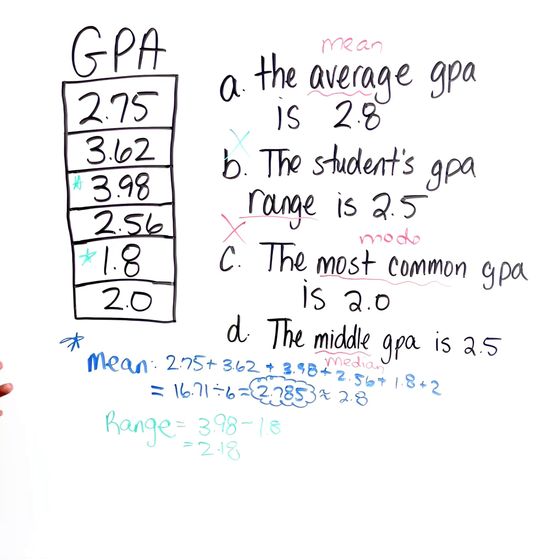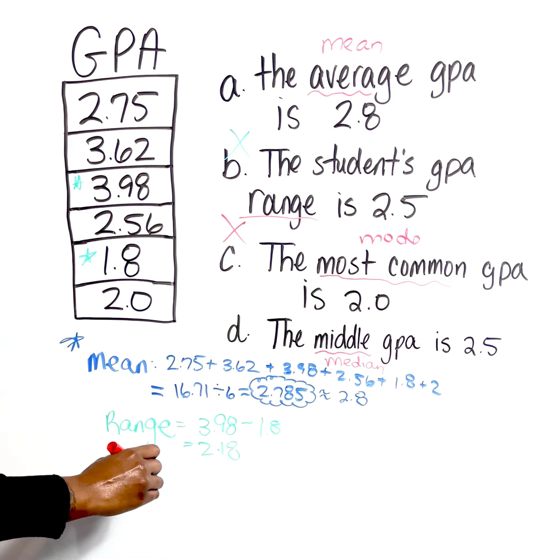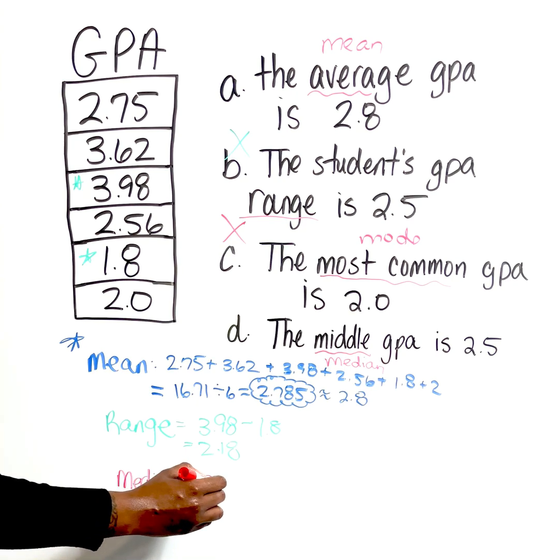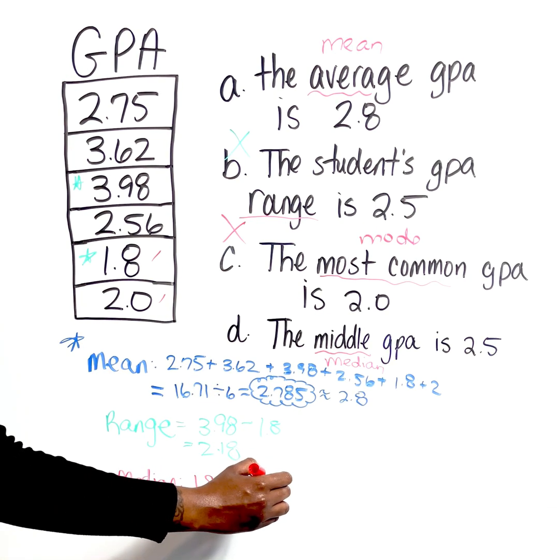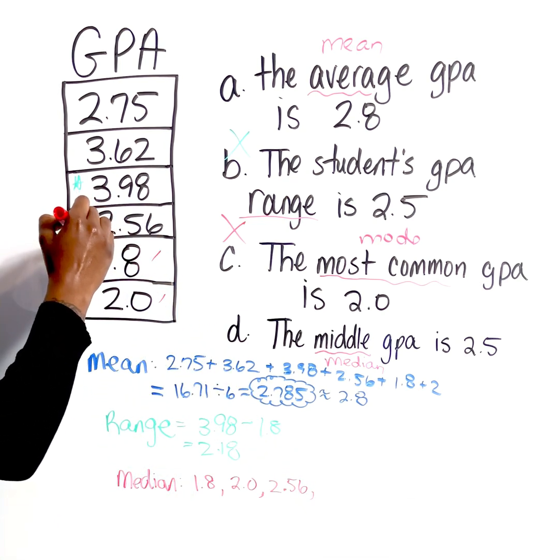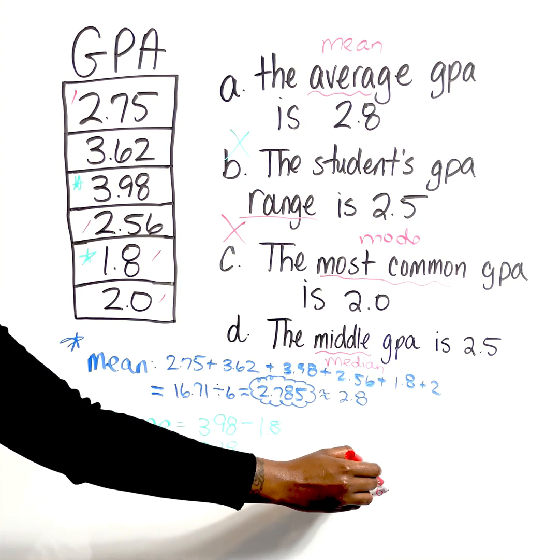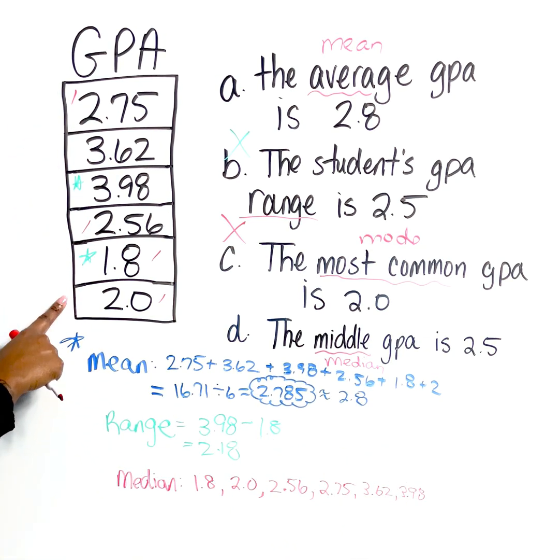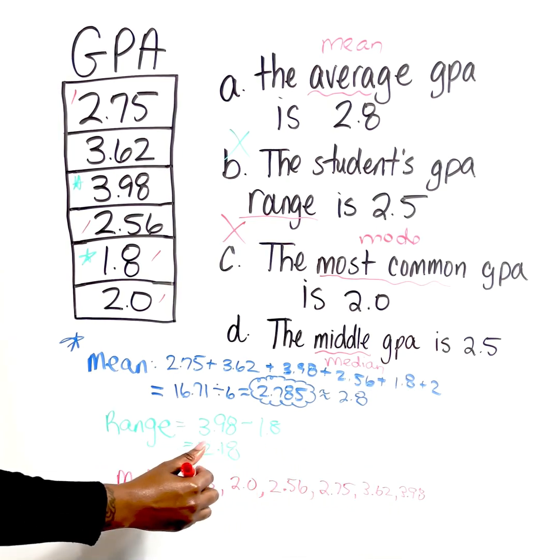And then D says the middle GPA is 2.5. And we said that is equivalent to the median. So anytime I want to find the median of a data set, I need to do what first? We have to put them in order from least to greatest. So we're going to go 1.8, 2.0, 2.56, 2.75, 3.62, and lastly, 3.98. So how many values do we have? We have 1, 2, 3, 4, 5, 6 values. So remember, when we have an even number of values in the data set, it means we have to find the average of what's in the center. So we always start from the outside and we work our way inside. So we're going to cross our values out in pairs.